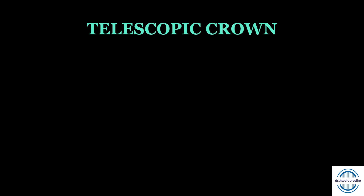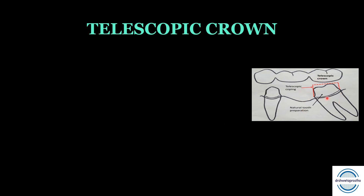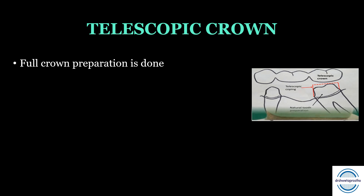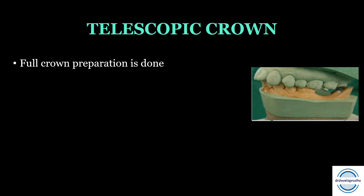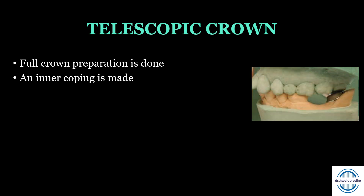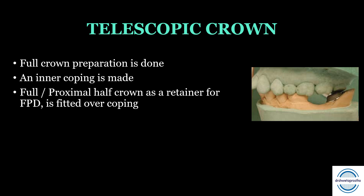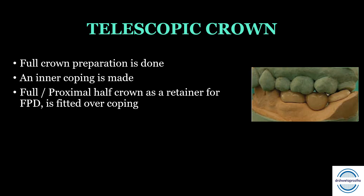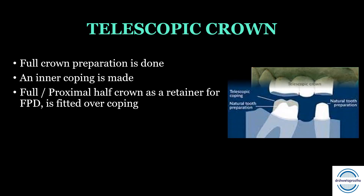Telescopic crown — as seen in the image, the tilted distal abutment is prepared, then a coping is made that is parallel to the mesial abutment, and over that the telescopic crown as part of the FPD is cemented. The full crown preparation of the tilted abutment is done along the long axis of the tilted molar. The inner coping is made to fit this preparation and is parallel to the mesial abutment. Over the coping, a full crown or proximal half crown retainer of the FPD is fitted. In the image, we can see the abutment, then the telescopic coping, and over that the telescopic crown retainer is cemented.